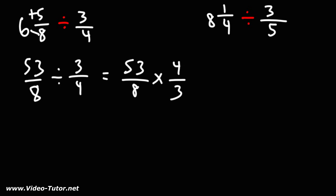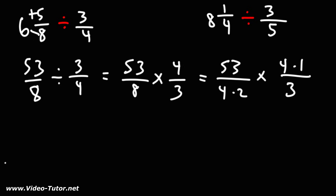Now, it's good to see if there's anything that can be canceled. 53 doesn't have any common factors with 3 or 8. But 8 has a common factor with 4. We could write 8 as 4 times 2, and 4 as 4 times 1, and we could cancel a 4. So now we could multiply across: 53 times 1 is 53, and 2 times 3 is 6. So we get 53 over 6.